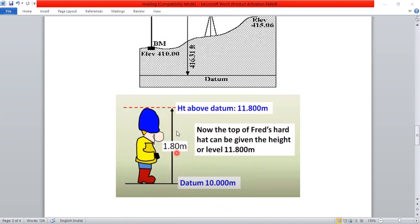Now, reduced level. In the benchmark, I have a height, I have a vertical, total distance. Then, 10 plus 1.8. Then, what is the reduced level? 11.8. So it is the reduced level. It is clear. Thank you.